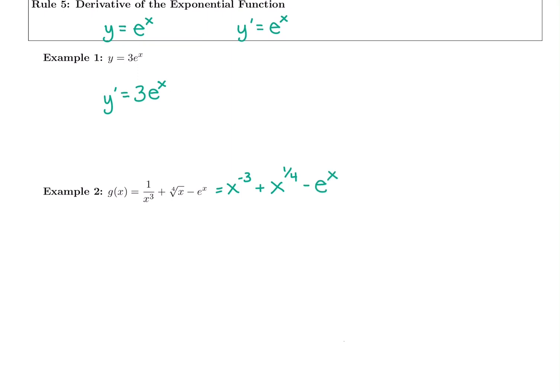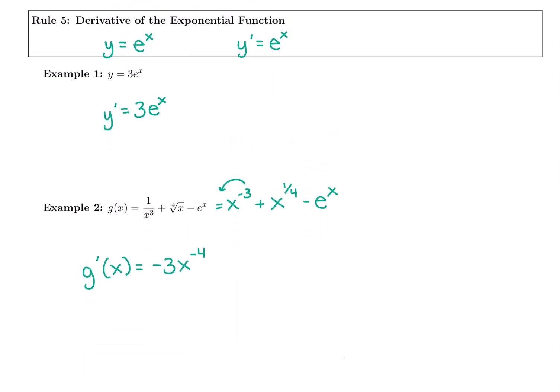Is that the final answer? No. We did not take the derivative yet. All we did was rewrite. Now we're ready for the derivative though. We'll bring down the power, negative 3. x to the negative 3 minus 1 is negative 4.